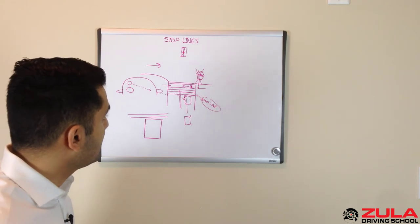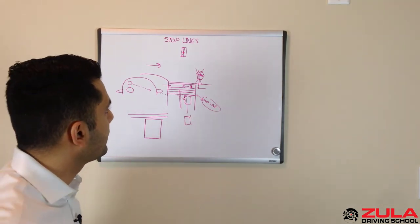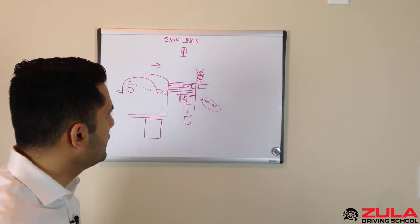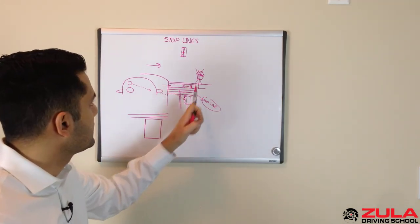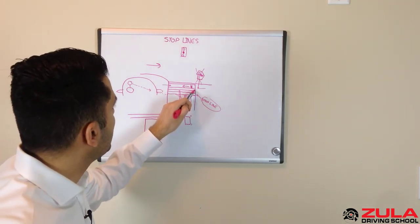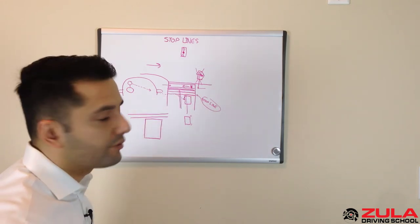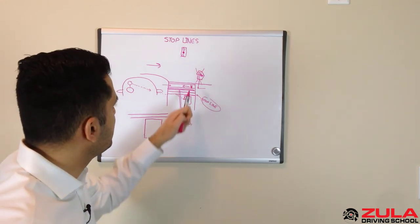Sometimes at residential intersections, there might not be a stop line. In that case, check to see if there's crosswalks. If there are crosswalks, you need to stop before the line of the crosswalk that is closest to you. If there are no crosswalks, check to see if there's any sidewalks.